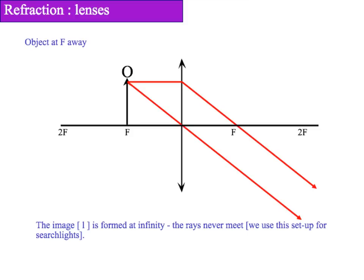If we continue to move our object closer, this time at f, then the first line will refract down through f. The second line as before has gone undeviated through the axes. This time the image will be formed at infinity as the rays will never meet, they will end up being parallel to each other, and we can use this set up for searchlights as we are magnifying the area between the two light rays.